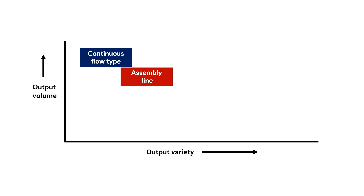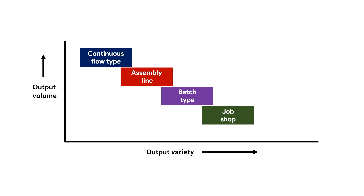Then comes the assembly line, where output variety increases but output volume goes down. Then comes the batch type production system, where output volume decreases further and output variety increases. The last production system shown is the job shop production system, where there is a lot of output variety but very little output volume, as job shop deals with output variety rather than output volume.